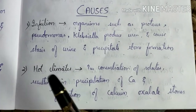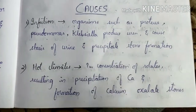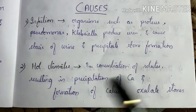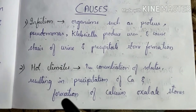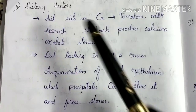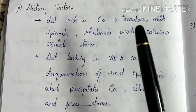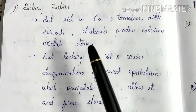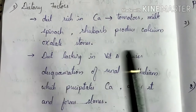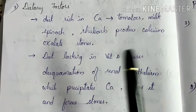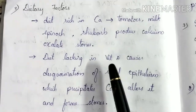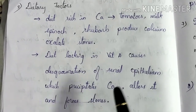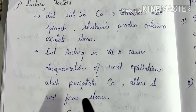Next is hot climate — in hot climates there is less solvent and more solute, and because of the increased concentration of solute, precipitation of calcium occurs, leading to calcium oxalate stone formation. Dietary factors include a diet rich in calcium — such as tomatoes, milk, spinach, and rhubarb — which precipitates calcium oxalate stone formation. A diet rich in red meat results in uric acid stone formation. A diet lacking in vitamin A causes desquamation of the renal epithelium, which precipitates calcium and results in stone formation.